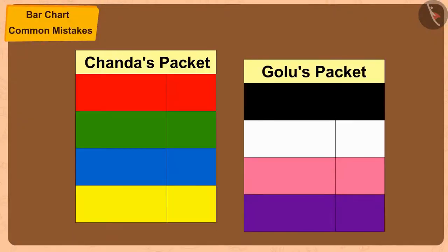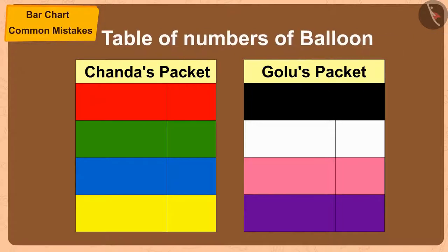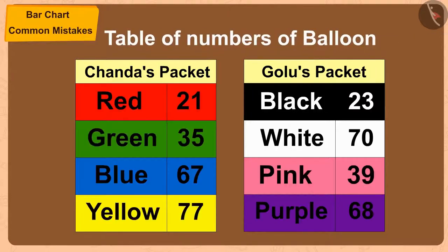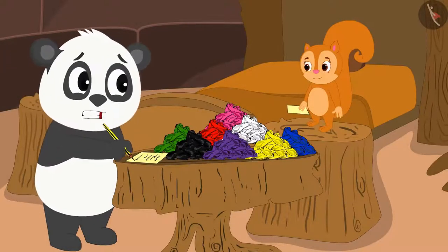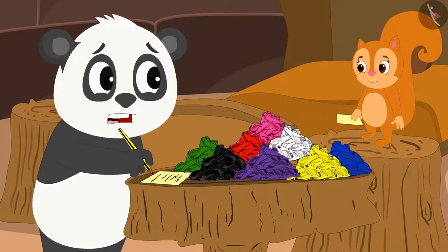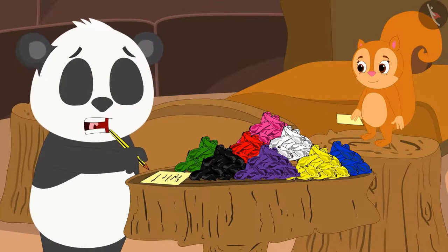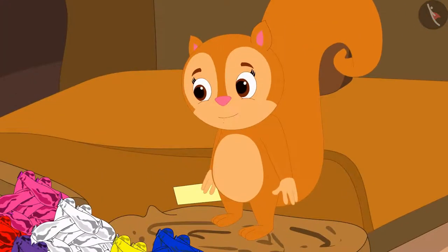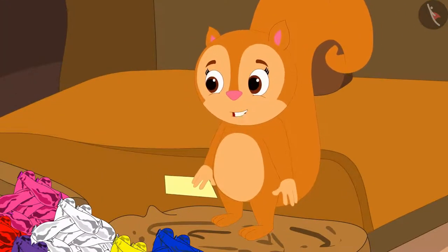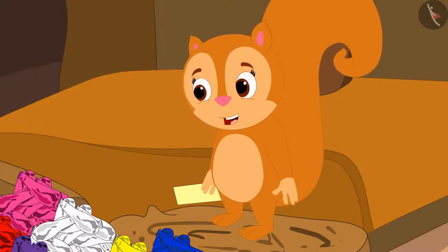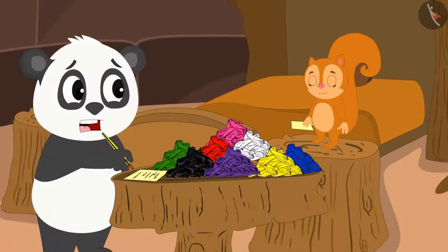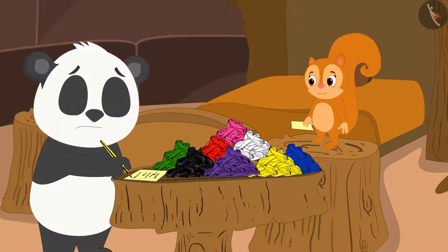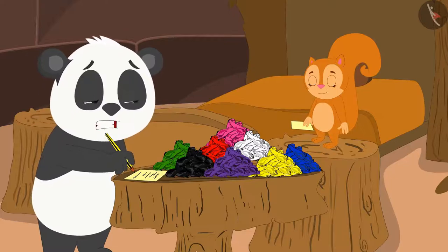Both Golu and Chanda made tables by counting the balloons in their packets. Golu says there are so many numbers and his head is spinning looking at it, asking if there is a simpler way. Chanda confirms they can show this information in a very simple way by making bar charts, and they both decide to make bar charts from their respective tables.